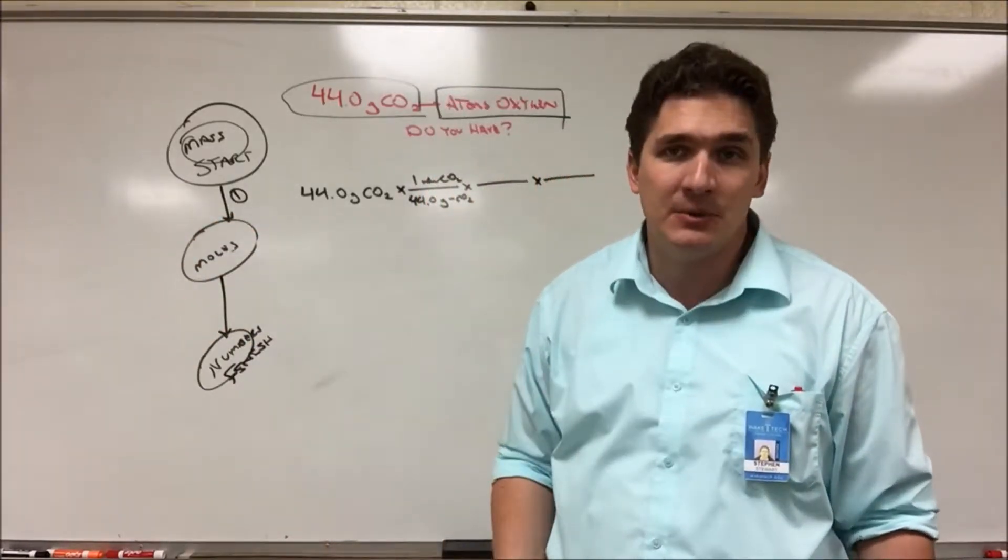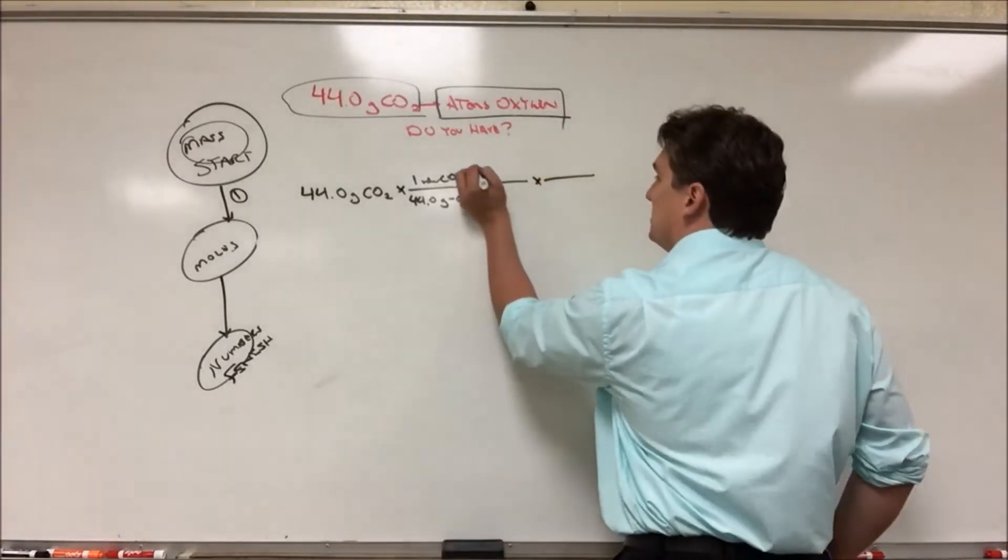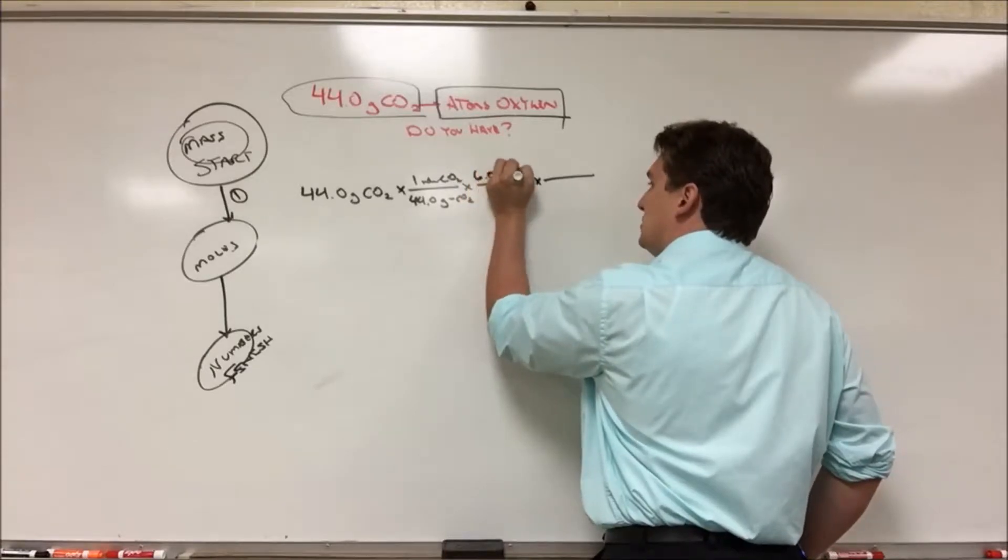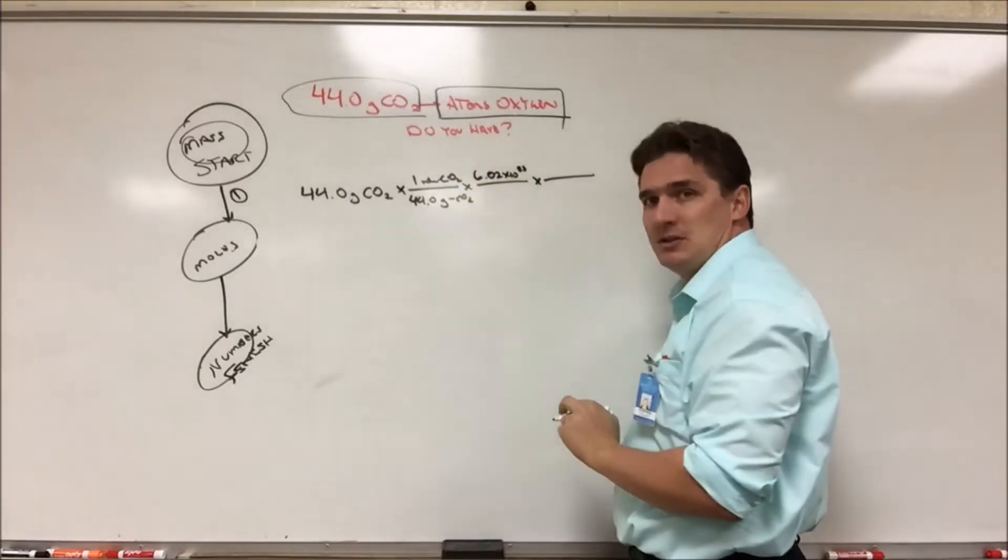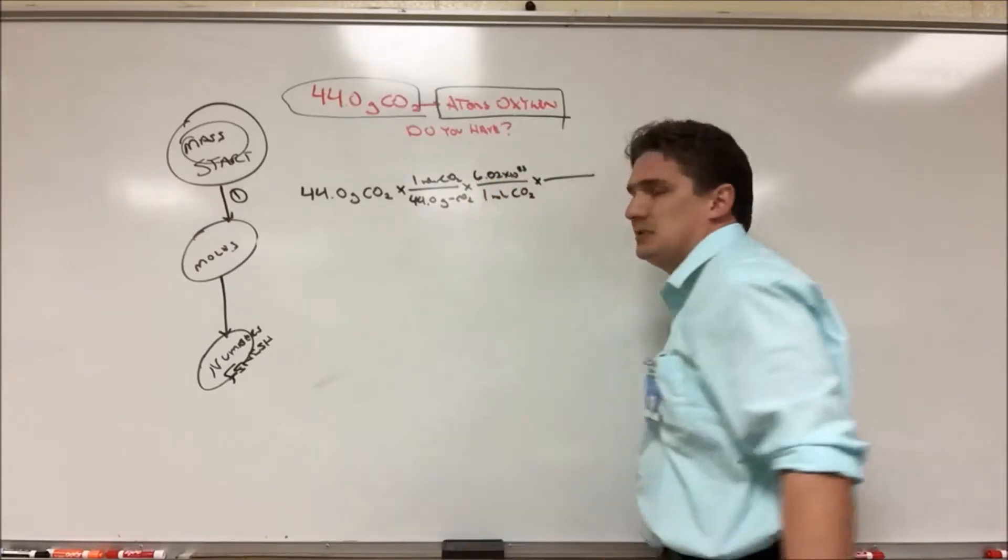So Avogadro's number is 6.02 times 10 to the 23rd. This is a very big number, which means we're going to need to multiply by it to get the very big number we should be finishing with. So this is going to be 6.02 times 10 to the 23rd molecules of CO2 for every mole of CO2.